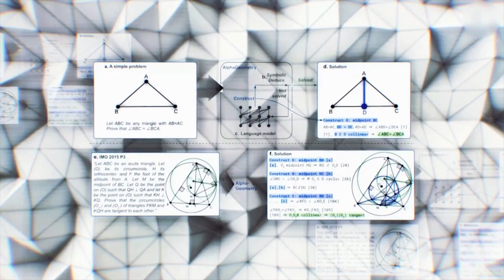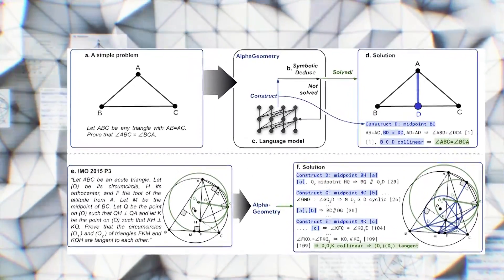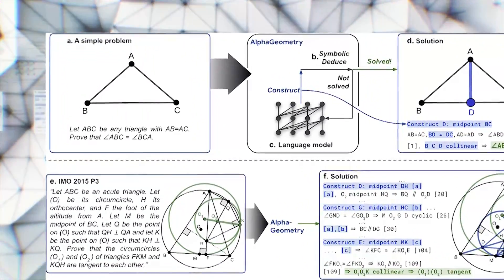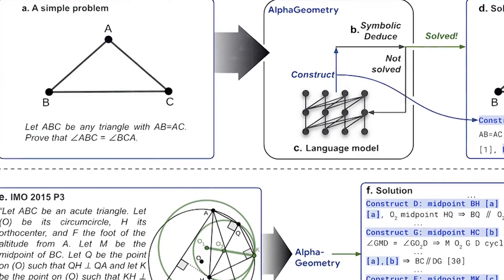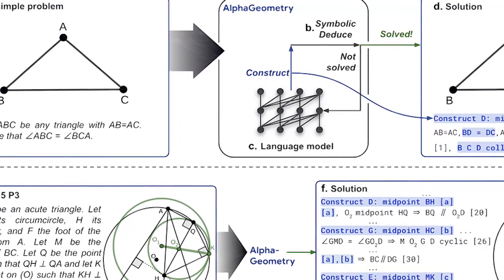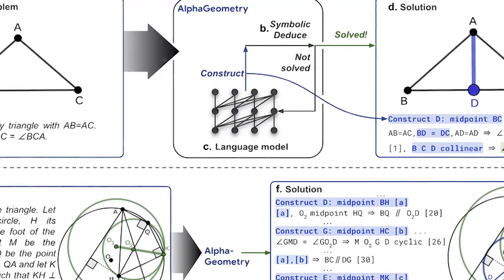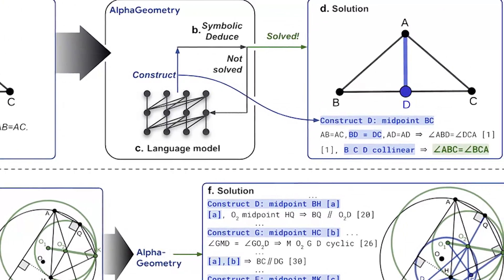The process begins with the AI examining the given problem, using its symbolic engine to deduce new information from the existing data. When this engine reaches its limits, the neural language model steps in, suggesting a new construct, like an additional line or point, that could open up new avenues for proof.